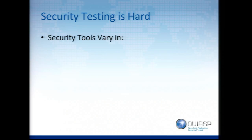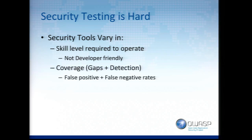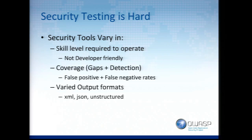Continuing on the 'security testing is hard' emphasis: looking at the different tools we were requiring developers to run, there was a lot of variation. The skill required to operate some tools is very minimal; some are very complex. They're not developer-friendly. There are coverages and gaps in detection — false positives, false negatives — and you need someone to interpret results and know which flags to run with a particular tool. Even varied output formats: XML, JSON, unstructured. It was really hard for a developer to know if they should care about a particular output.